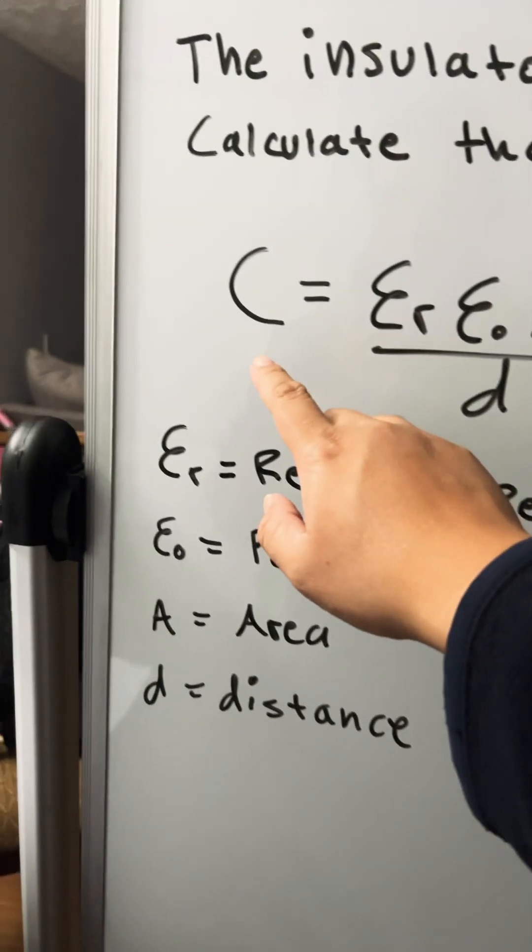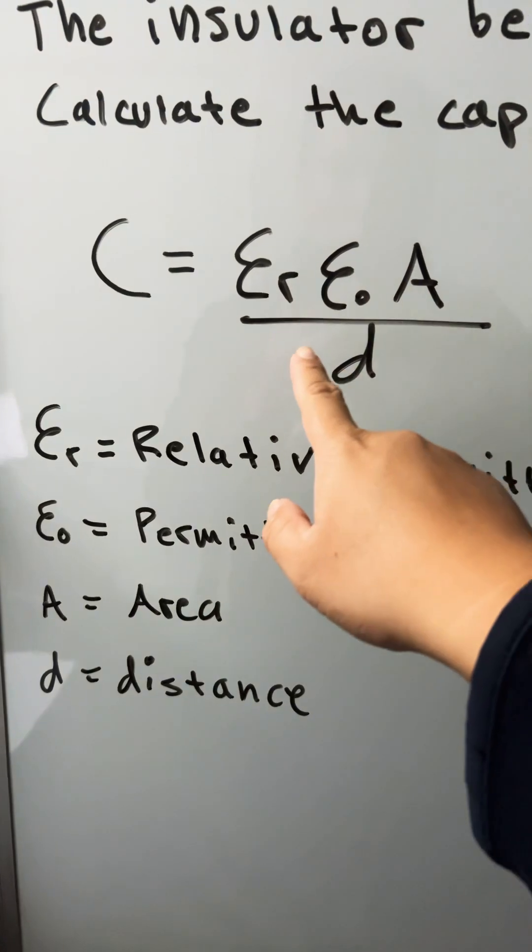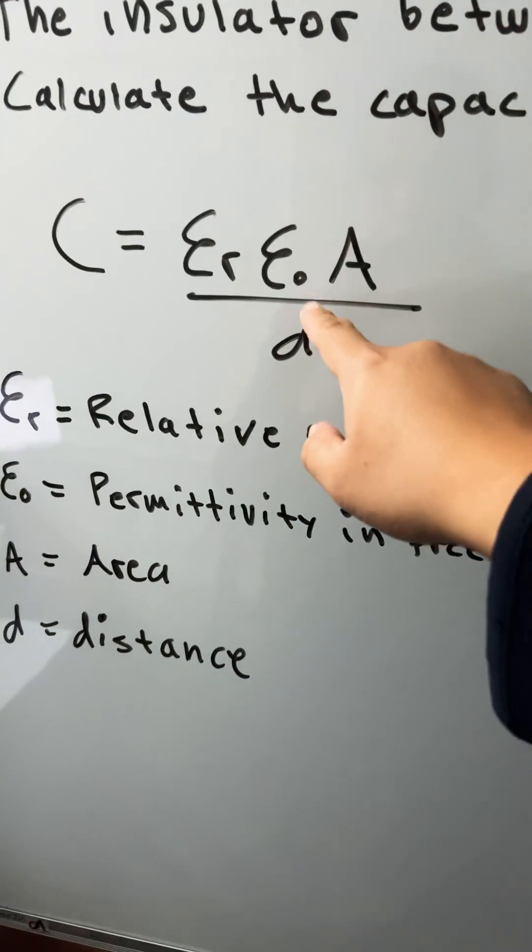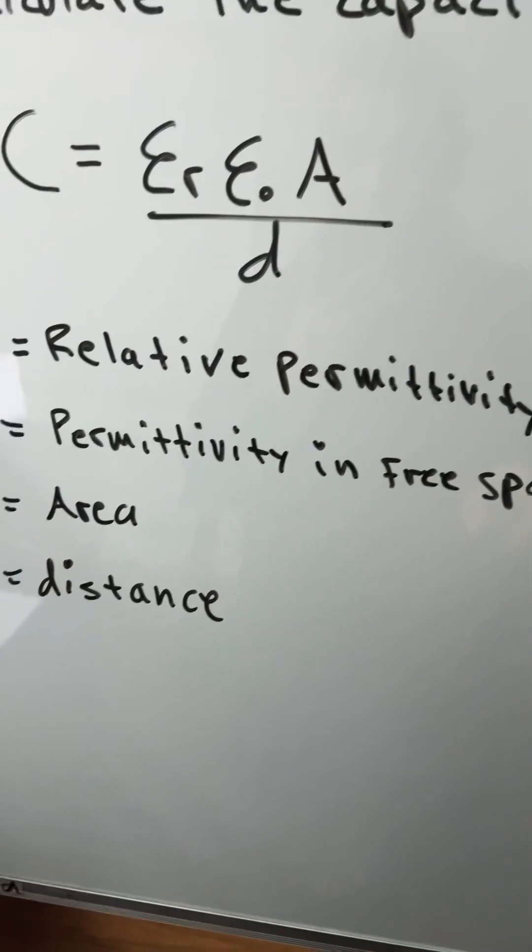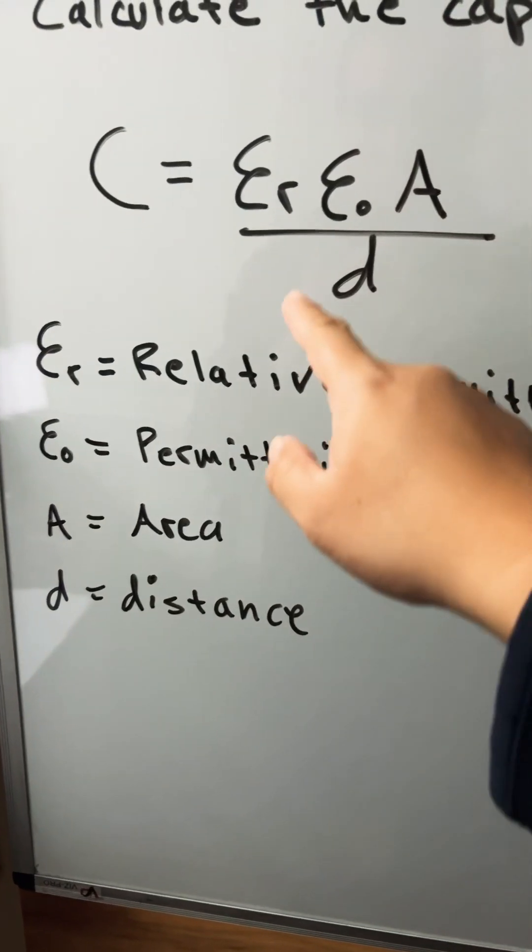So this is the capacitance formula. We have relative permittivity εr, ε0 which is permittivity in free space, times the area divided by the distance.